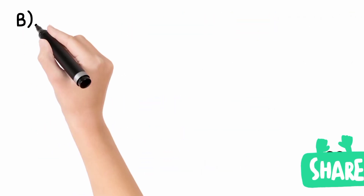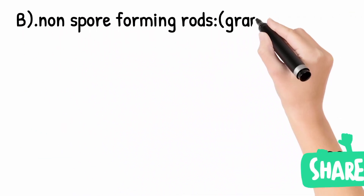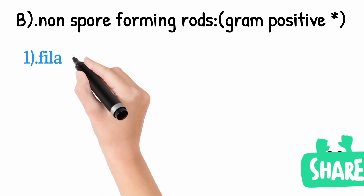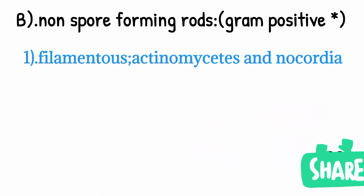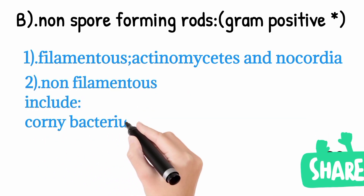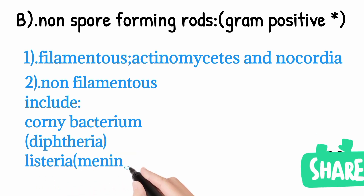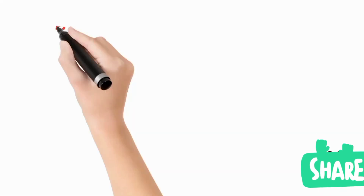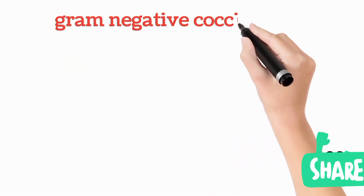Non-spore-forming rods do not form spores and include filamentous and non-filamentous categories. Filamentous organisms include Actinomycetes and Nocardia, causing actinomycosis and nocardiosis respectively. Non-filamentous organisms include Corynebacterium and Listeria. Corynebacterium causes diphtheria, while Listeria monocytogenes causes meningitis.